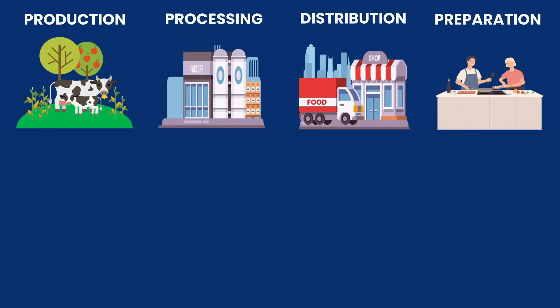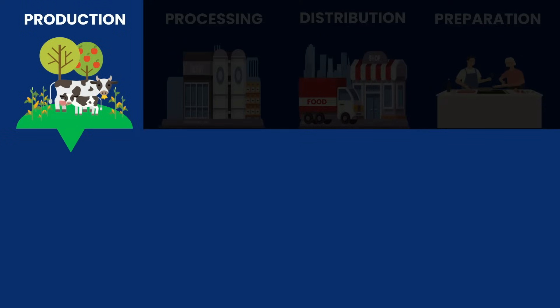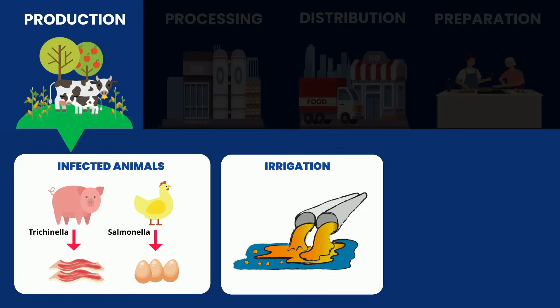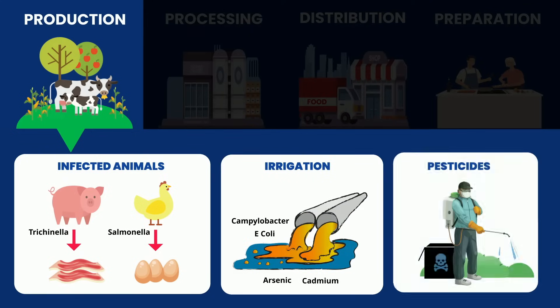Contamination can happen at any of these steps. At the production step, contamination can happen if animals are infected and transmit pathogens to their meat or to animal products such as eggs or milk. If the water used to irrigate fruits and vegetables contains pathogens or chemicals. Or if there's inappropriate use of pesticides, which can lead to toxic pesticide residues in food.